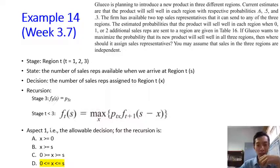The answer is B because the number of people that you may assign to a region must be a non-negative number, so it must be greater than or equal to zero. However, it must be less than or equal to s, the number of sales representatives that you have at the beginning of region t.